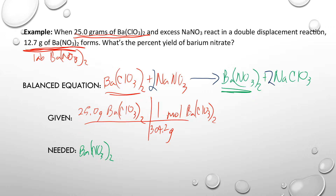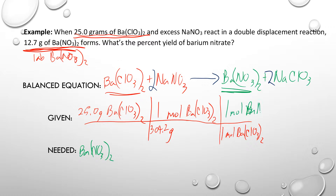That gets us out of grams and into moles. Every time you do one of these problems, you need to use the mole-to-mole ratio from the balanced equation. The balanced equation tells us for every one mole of Ba(ClO3)2, there is one mole of barium nitrate.